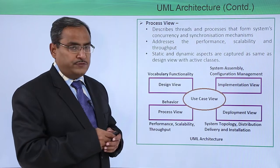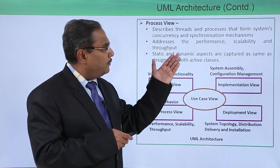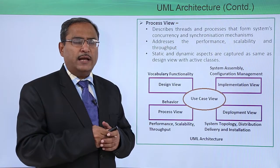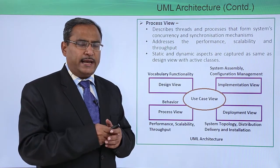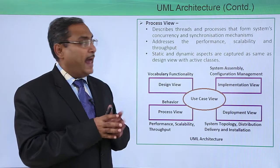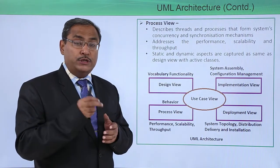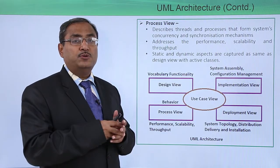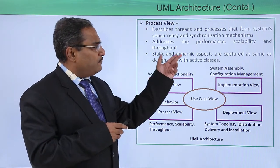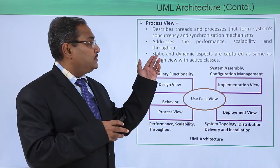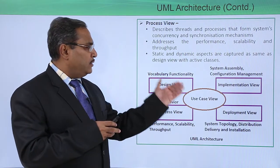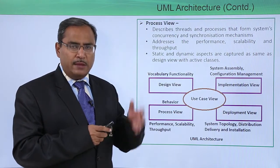Now let us go for the Process View. It describes threads and processes that form the system's concurrency and synchronization mechanisms. A lightweight process is known as a thread, and threads can be executed in parallel simultaneously. Synchronization refers to the ordering of which process executes first and which executes next. It addresses performance, scalability, and throughput. Static and dynamic aspects are captured as in the design view, using active classes. This process view depicts the dynamic view of the system.